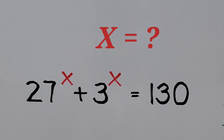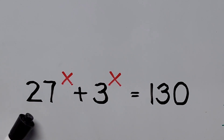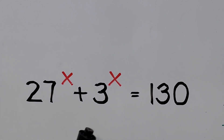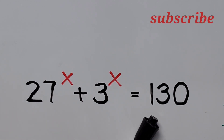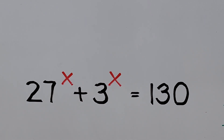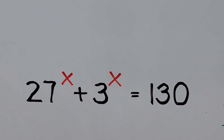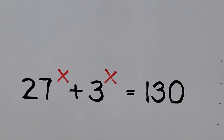Hello everyone. We have here a given exponential equation: 27 to the power of x plus 3 to the power of x equals 130. We'll be solving for the real values of x. In this video, I'll be presenting three ways to solve the equation. Alright, let's do it.